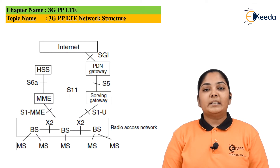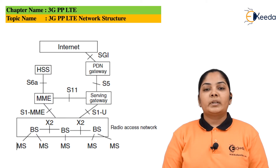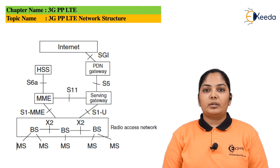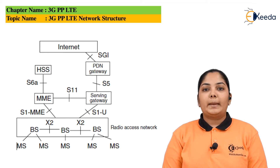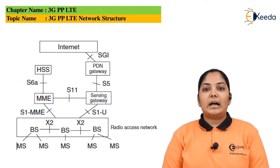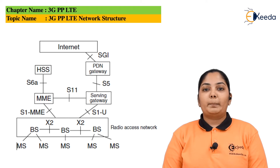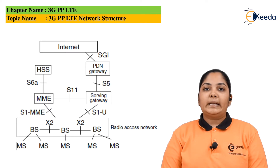Each Base Station is connected by the S1 Interface to the Core Network. For LTE, a new Core Network — a System Architecture Evolution or SAE, also known as Enhanced Packet Core or EPC — was developed. It consists of the Mobility Management Entity (MME), a Serving Gateway that connects the network to the RAN (Radio Access Network), and the Packet Data Network Gateway which connects the network to the Internet.